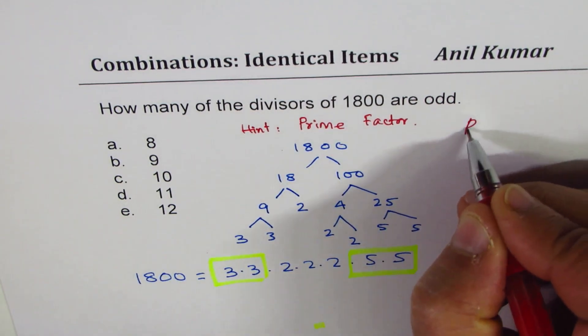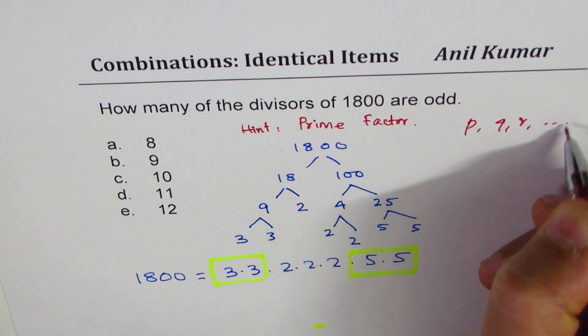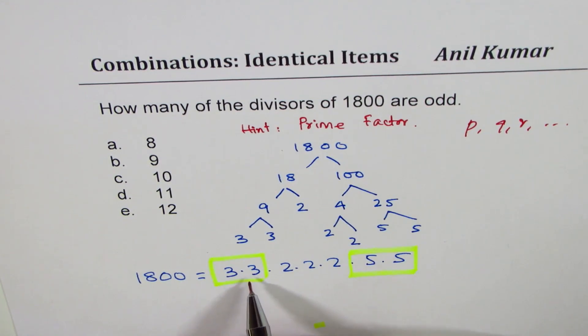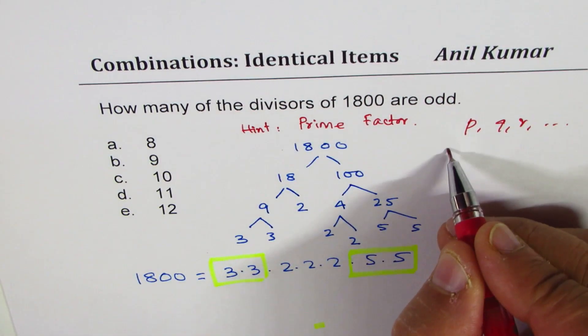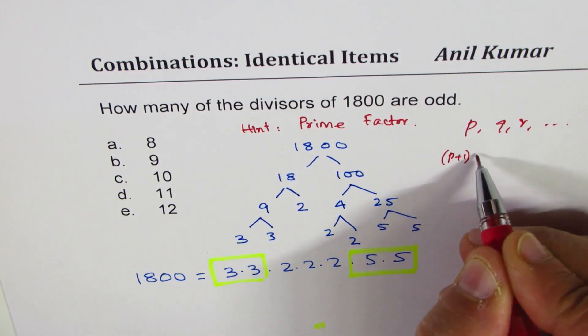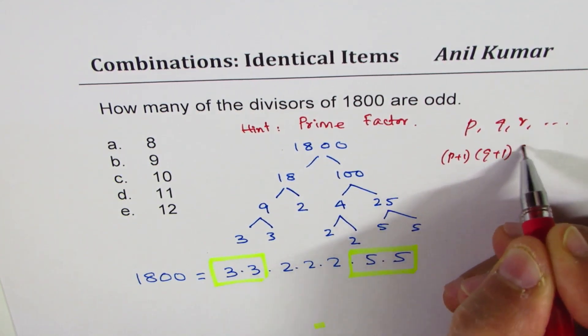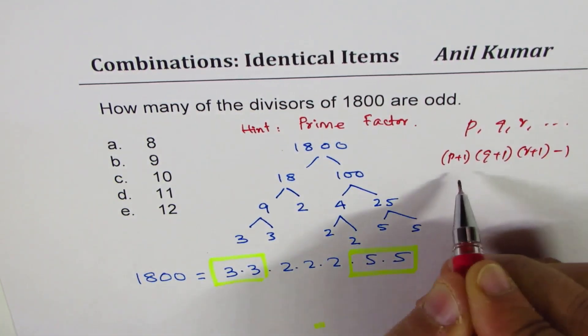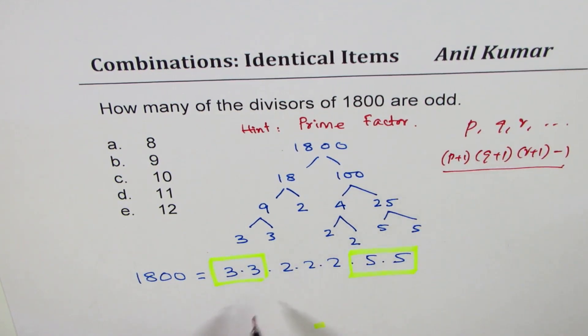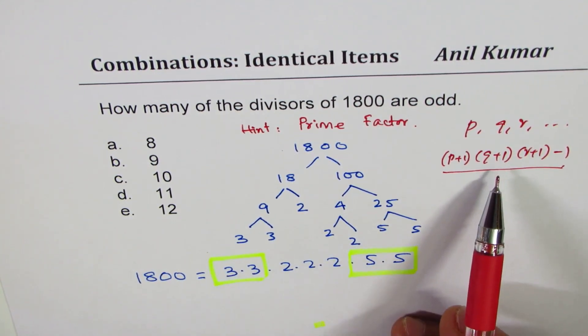If there are p, q, r, and so on identical elements, then the combinations are (p+1) times (q+1) times (r+1) minus 1. That formula is being used now. The idea of this formula is if I have two 3's, I could select one 3, two 3's, or no 3, so I have 3 choices - one more than the number of 3's.